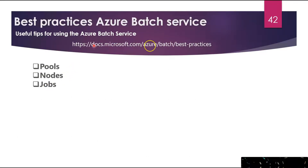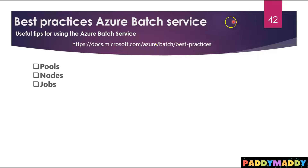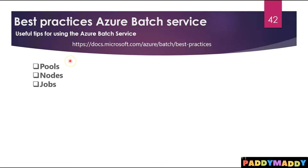Now let's look at best practices for Azure Batch. There are a few key ones to know, though you can visit the linked page for more Microsoft-recommended best practices. Regarding pools: if your job consists of short-running tasks, don't create a new pool for each job, as the overhead of creating new pools will diminish the runtime. It's best to have jobs use pools dynamically, because if jobs always use the same pool, the job won't run if something goes wrong with that pool.